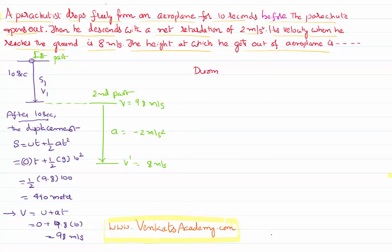During the second phase, when the parachute got opened, I can use a simple equation of motion: v² = u² + 2as.